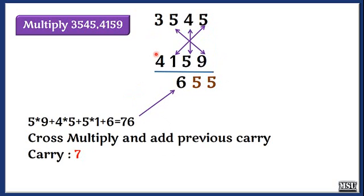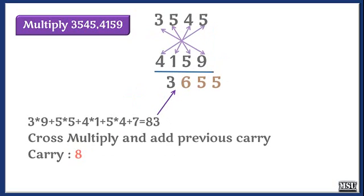And then 3 cross multiplications: 5 into 9, 1 into 5, 4 into 5. I am going to get the result. And then I am going to perform 4 cross multiplications.